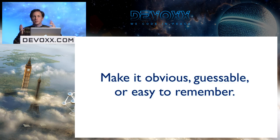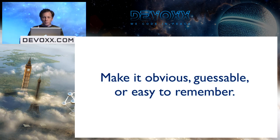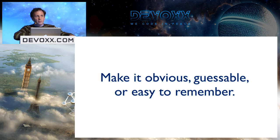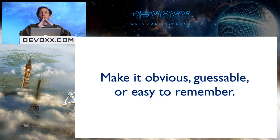Sometimes you can't make it obvious, and then the fallback is to make it guessable — someone looks at the code and thinks, 'I'm not sure what that is but I think it probably means this,' and whatever that is, that's what it means. And if you can't make it guessable, the last option is to make it easy to remember. What you want to avoid is every time someone sees that in the code, they have to look it up to remember what it meant.